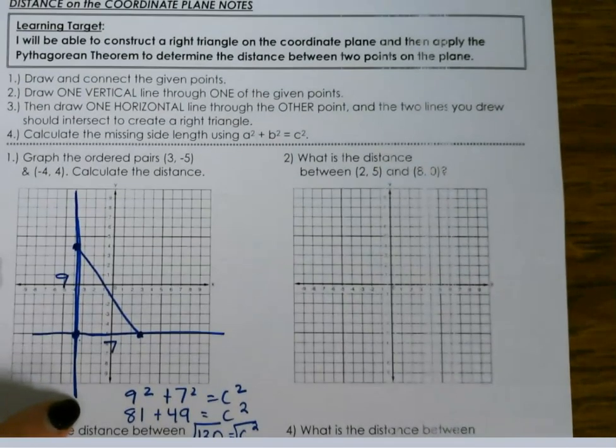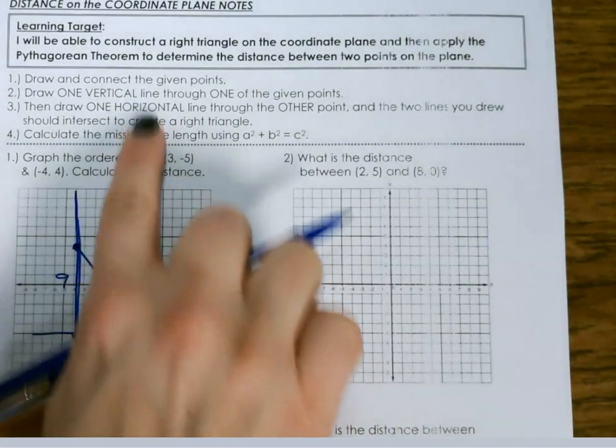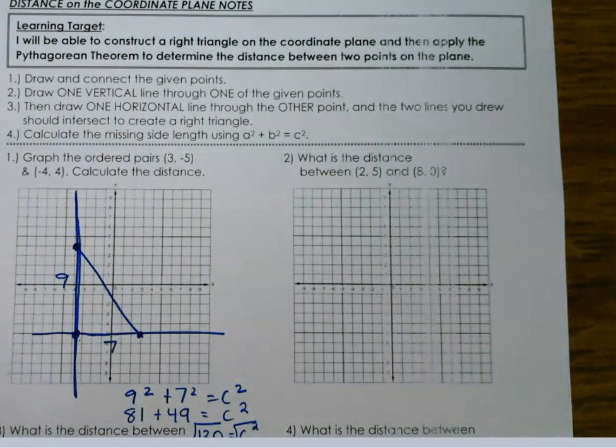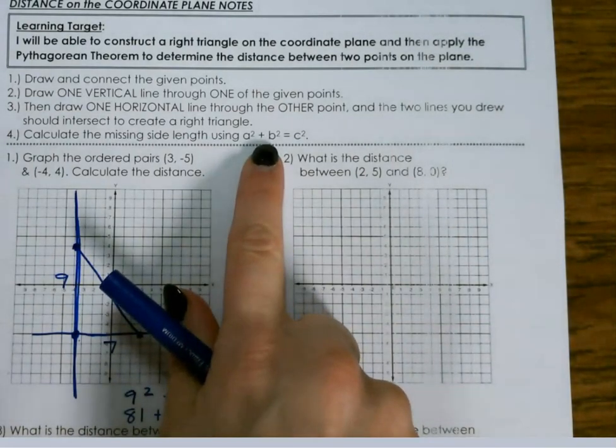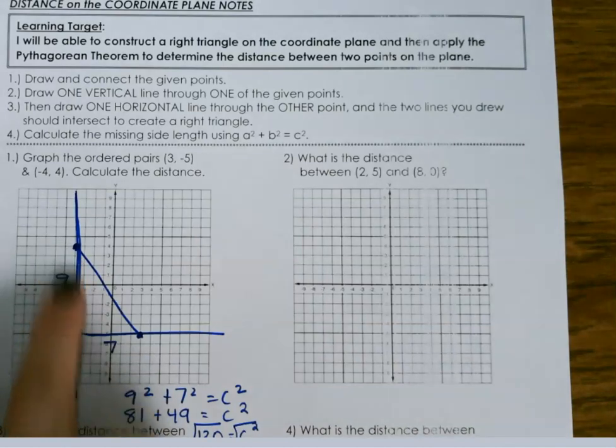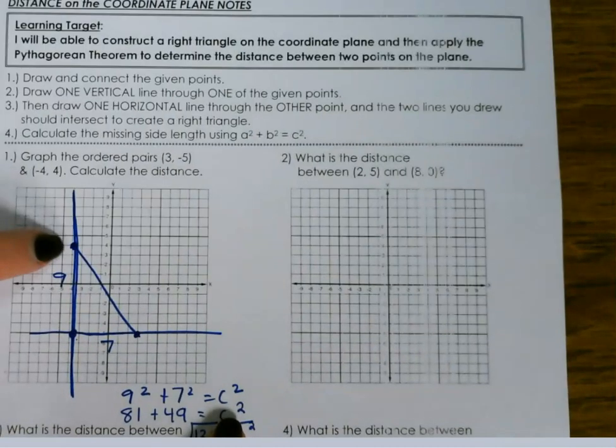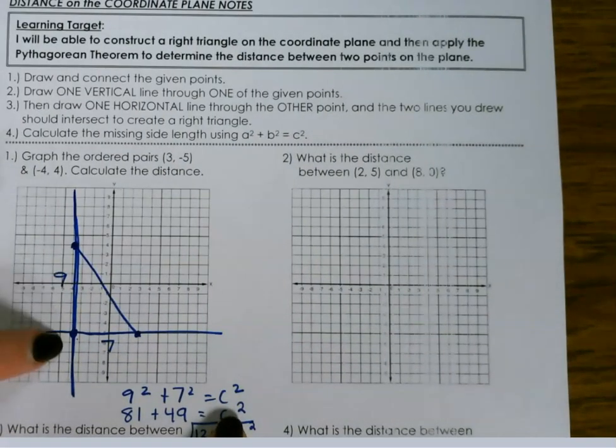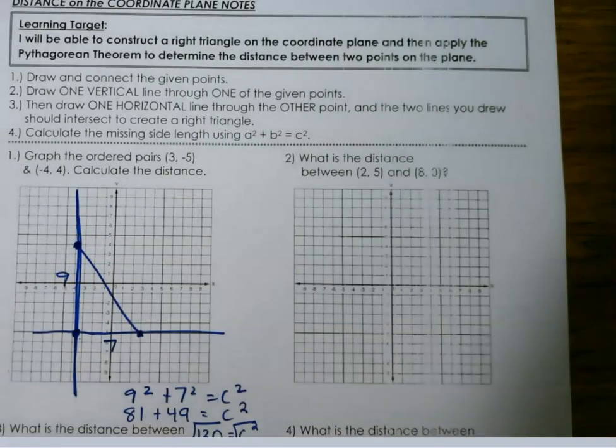So again, you just draw and connect the points. Draw a vertical and horizontal line to create your triangle and calculate the missing side using a squared plus b squared equals c squared. Remember, you can count your boxes or use the values that your points are plotted at from the x-axis or y-axis.